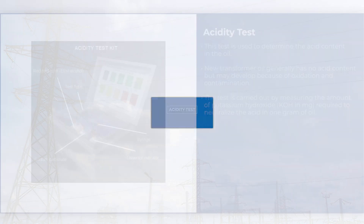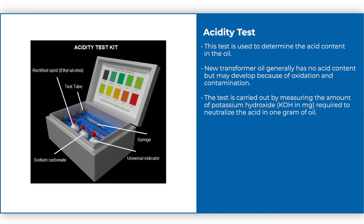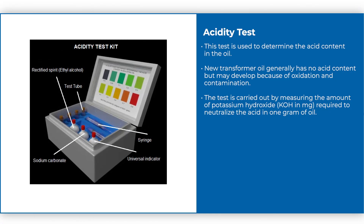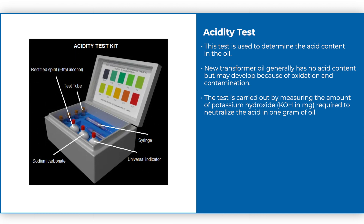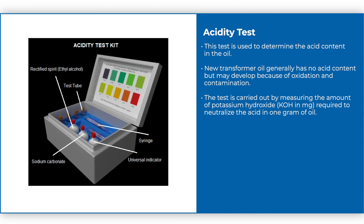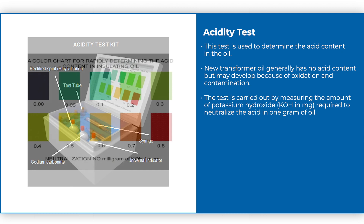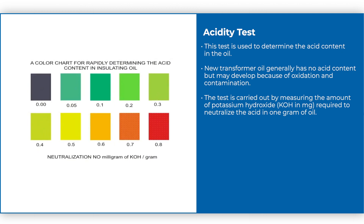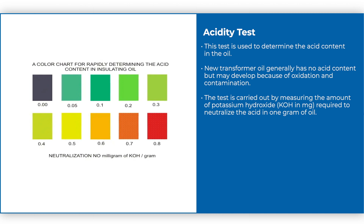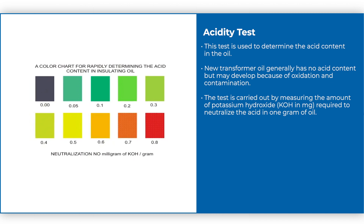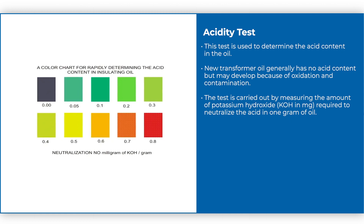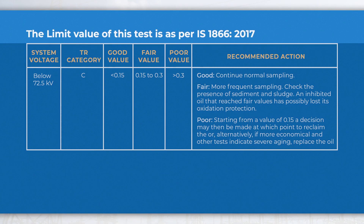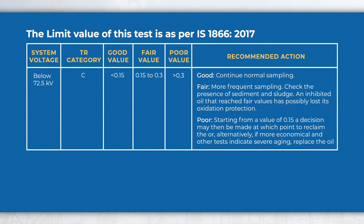Acidity test: This test is used to determine the acid content in the oil. New transformer oil generally has no acid content but may develop acidity because of oxidation and contamination. The test is carried out by measuring the amount of potassium hydroxide (KOH) in mg required to neutralize the acid in 1 gram of oil. The limit value of this test is as per IS 1866:2017, given in the table.